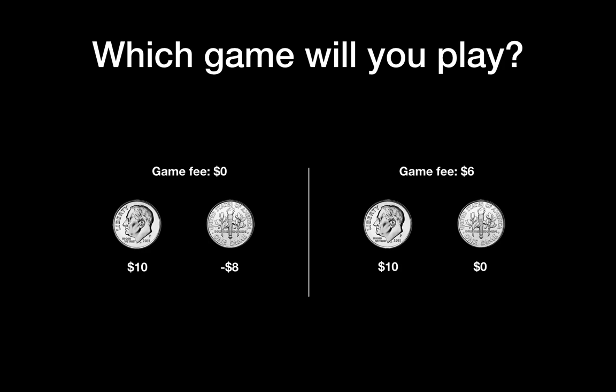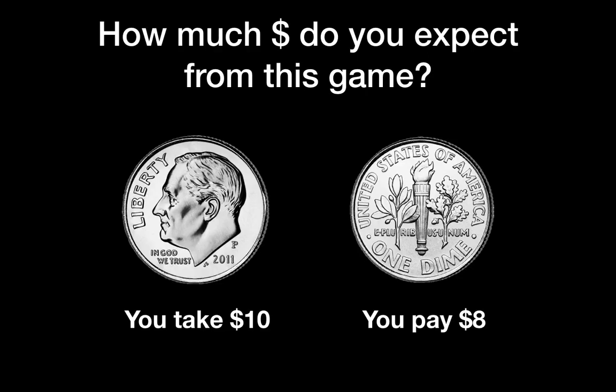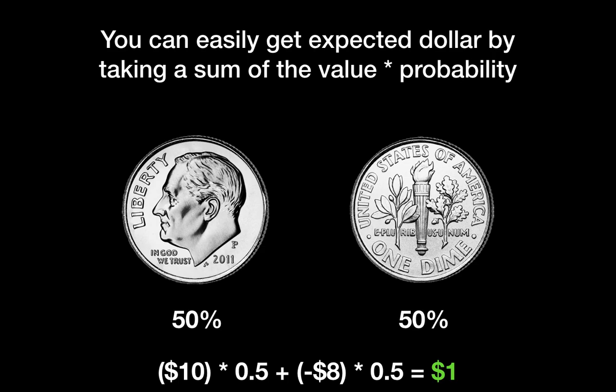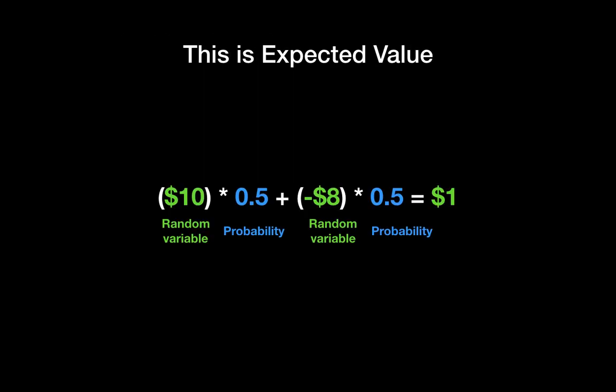Let's look at the first game. You take 10 dollars for the front side and pay 8 dollars for the back side. If the coin is perfect, you have a 50% chance for each side. Calculating the expected value, you get plus one dollar from the first game. You get this by taking the sum of each value times its probability — that's the expected value formula.